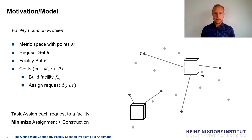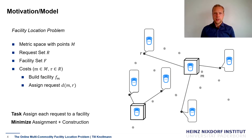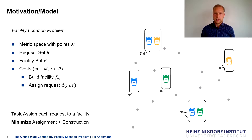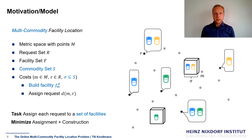This problem has been studied a lot. However, it has one crucial assumption: namely that all the requests ask for the same single commodity. They all ask, for example, for a blue drink and the facilities also only offer blue drinks. However, in the real world there might be requests that ask for green drinks or yellow ones, or a blue and a yellow one. So this brings us to the multi-commodity facility location.